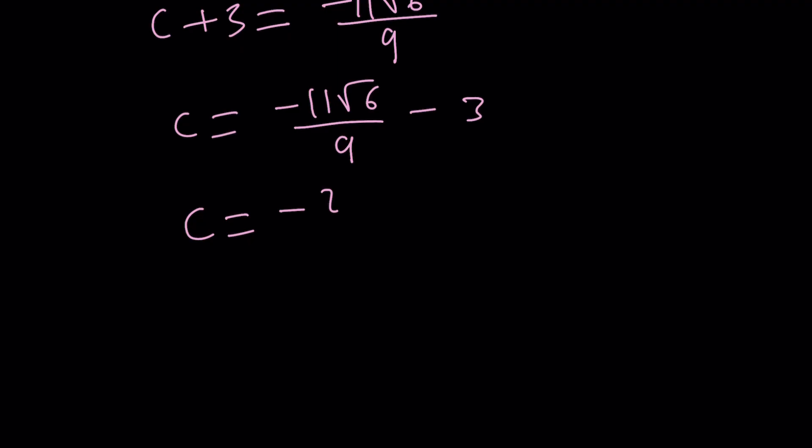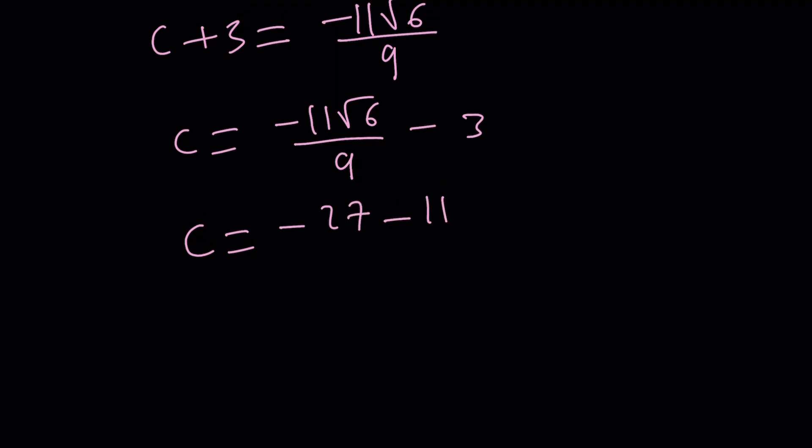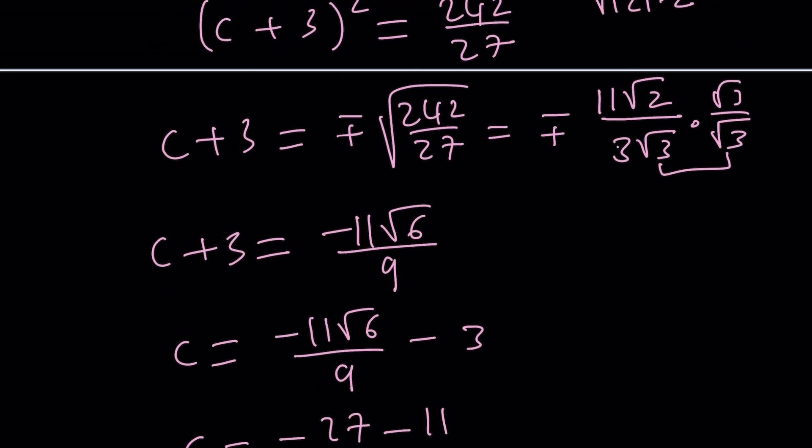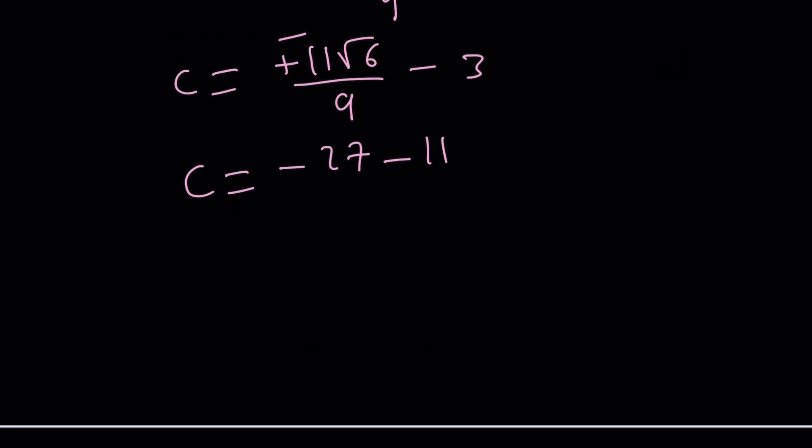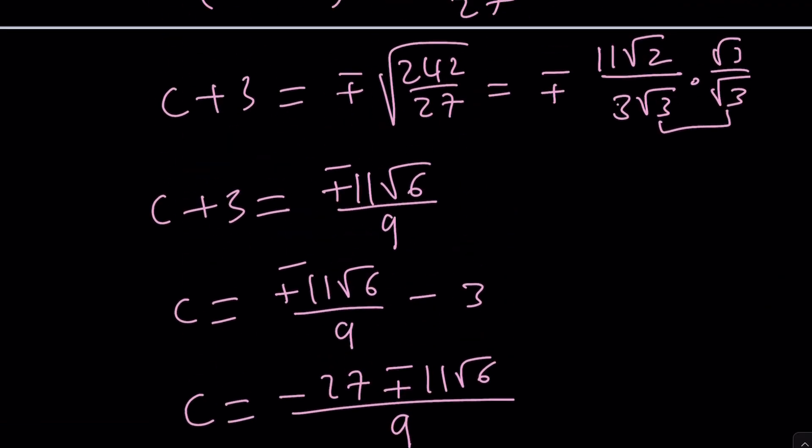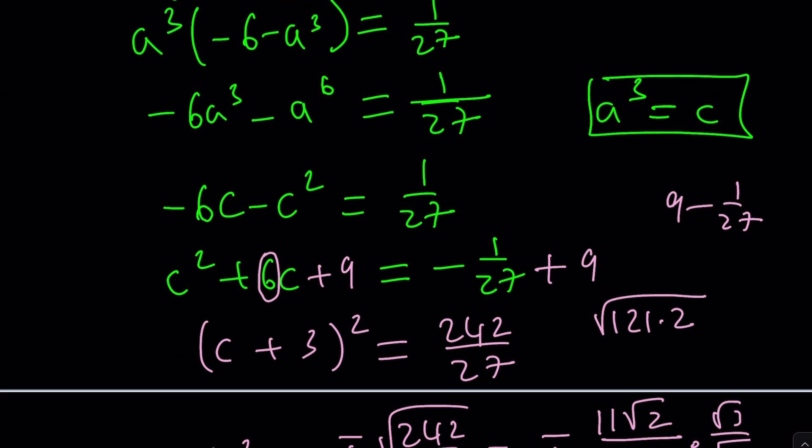But this is the C value, and if you subtract 3 from both sides, you should get negative 27 minus 11 root 6. We're supposed to have a plus minus sign, so we should keep the plus minus sign here. We're going to get negative 27 plus minus 11 root 6 divided by 9. Cool. So that's the C value, but C equals A cubed or B cubed.